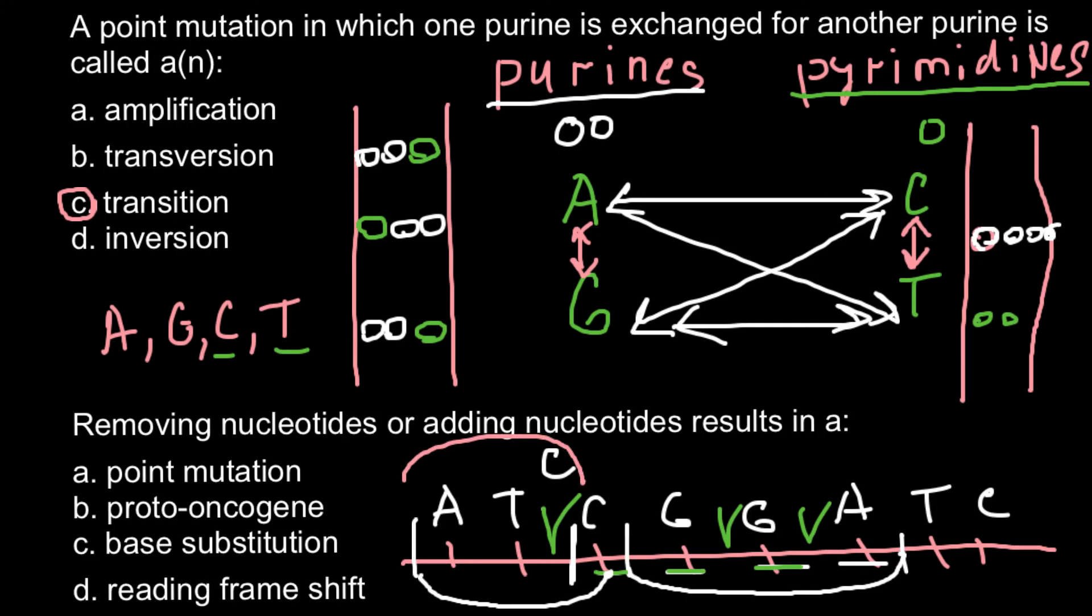Trinucleotides: this is going to be the first trinucleotide, this is going to be the second, and this is going to be the third. As you see, we got a frame shift. Now all the other trinucleotides would be different, and we will get a completely different sequence of nucleotides.